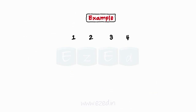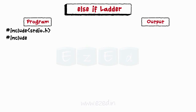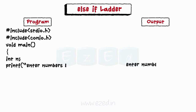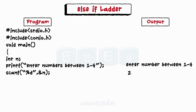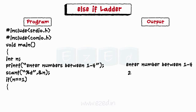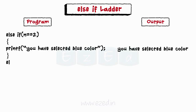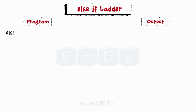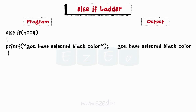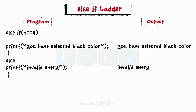Let's take a simple example: the user inputs a number between 1 and 4, and the corresponding color is displayed. We design a main function, ask the user to enter a number using printf, and accept the input. Using else-if: if user enters 1, display red; else if 2, display blue; else if 3, display green; else if 4, display black. If any other number is entered, display an invalid entry message. We end the program with the getch function.